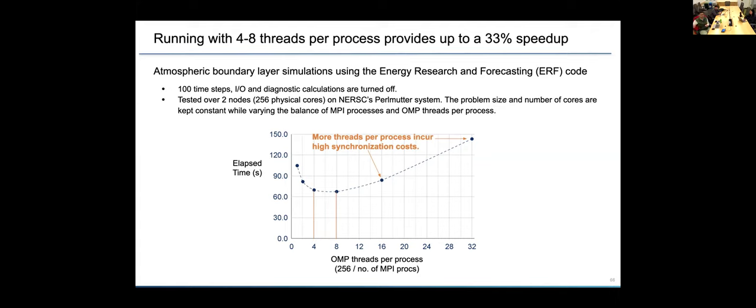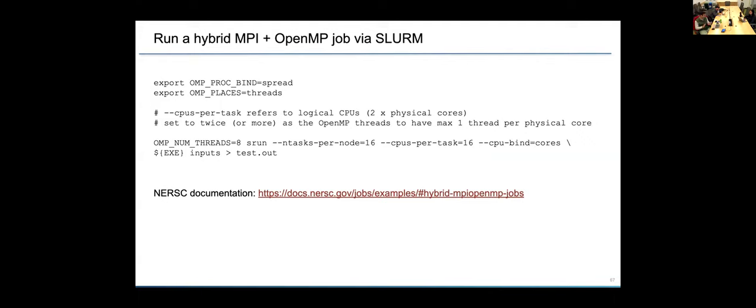And so obviously, these things, the amount of speed up that you get or how many threads would be optimal depends highly on how you code your application. But just showing how much performance gain you can get by using OpenMP. And of course, as we use more number of threads, since this is a stencil code, the threads need to synchronize with each other frequently. And if you use too many threads, then that increases the synchronization cost and it's no longer beneficial.